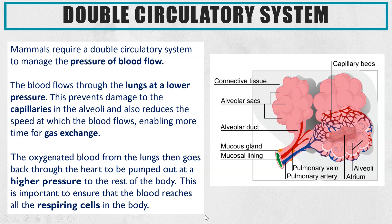The reason mammals have a double circulatory system is the need to control the pressure of blood flow, because different parts of the body require blood at different pressures. For the lungs, blood is required at a lower pressure so the blood flows through slower, causing less or no damage to the capillaries surrounding the alveoli. Lower pressure also means the blood moves more slowly through the capillaries, giving more time for oxygen to diffuse from the alveoli into the capillary and carbon dioxide to diffuse from the capillaries into the alveoli — in other words, gas exchange.